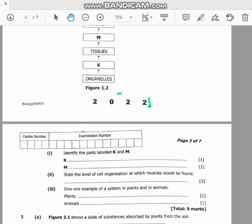Question 3: give one example of a system in plants and in animals. In plants you can say the root system, which is responsible for anchoring the plant to the ground. And in animals you can say the nervous system, which is responsible for transmitting signals between different parts of the body and coordinating responses to stimuli.